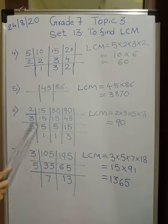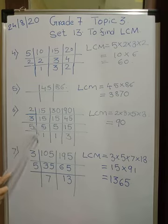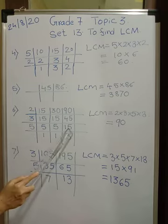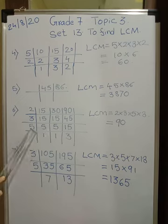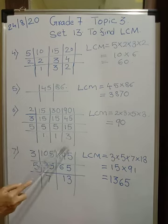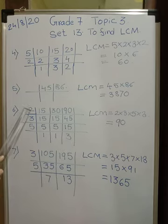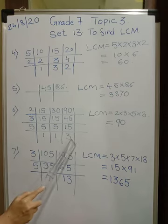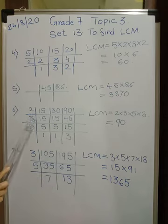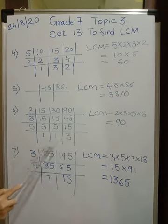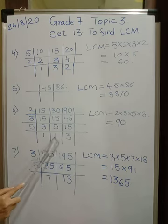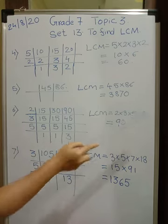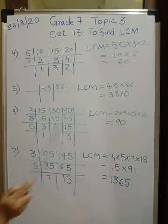Now all three — 15, 15, and 45 — are divisible by 3, giving 5, 5, and 15. Then all three are divisible by 5, giving 1, 1, and 3. The LCM equals the first column multiplied by the last row: 2 × 3 × 5 × 1 × 1 × 3 = 30 × 3 = 90.